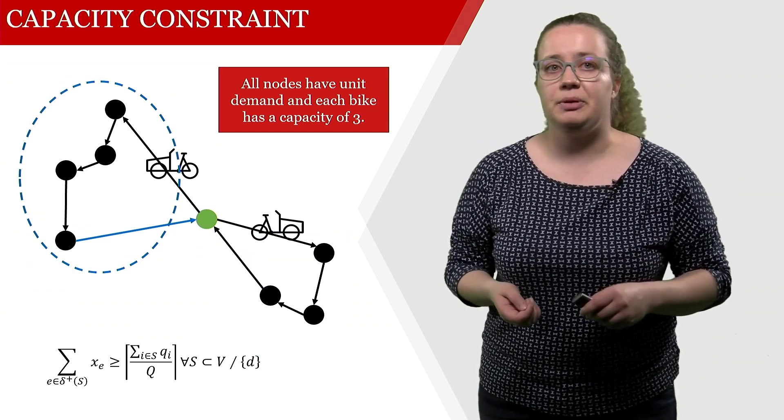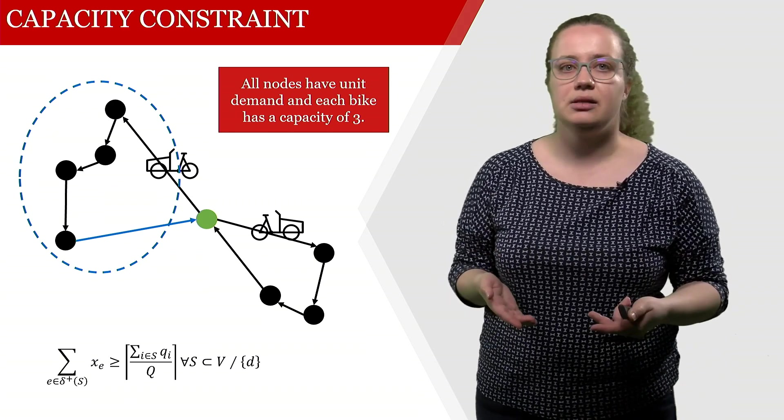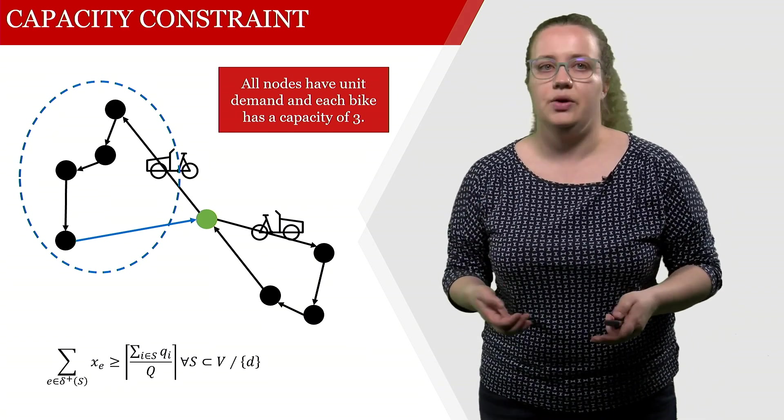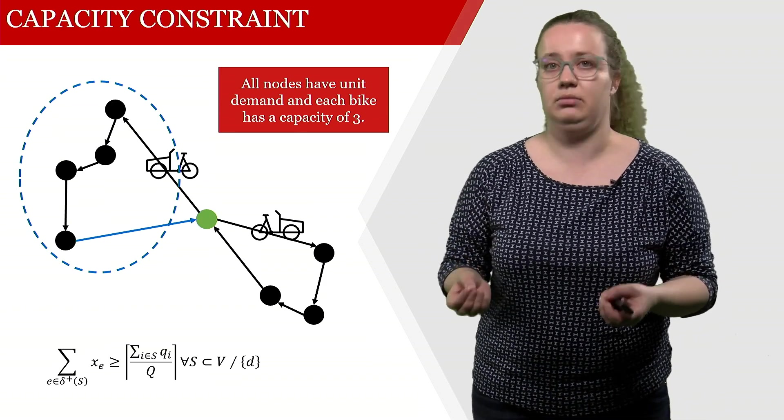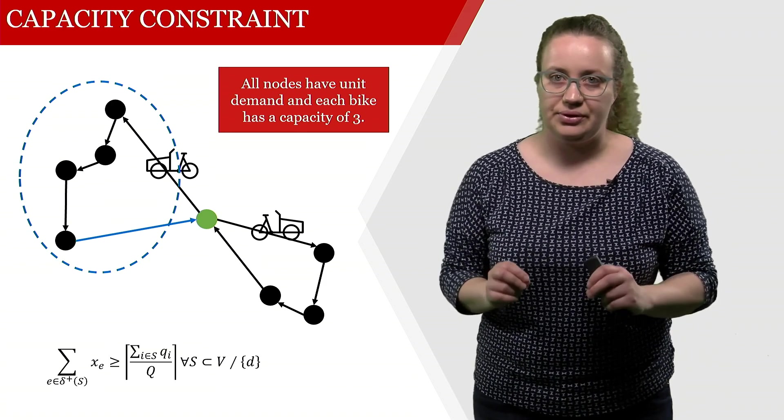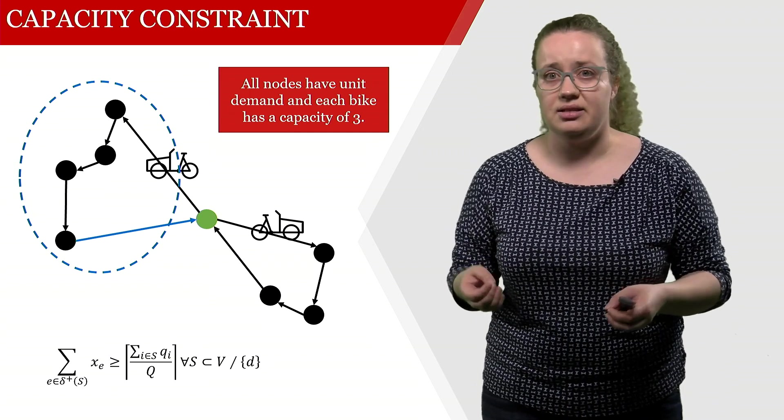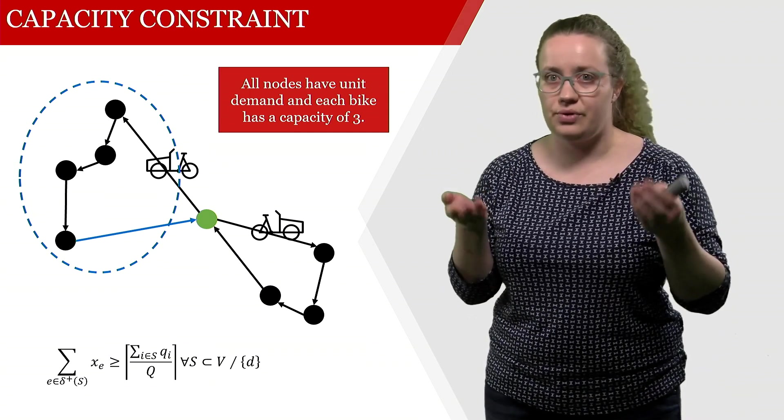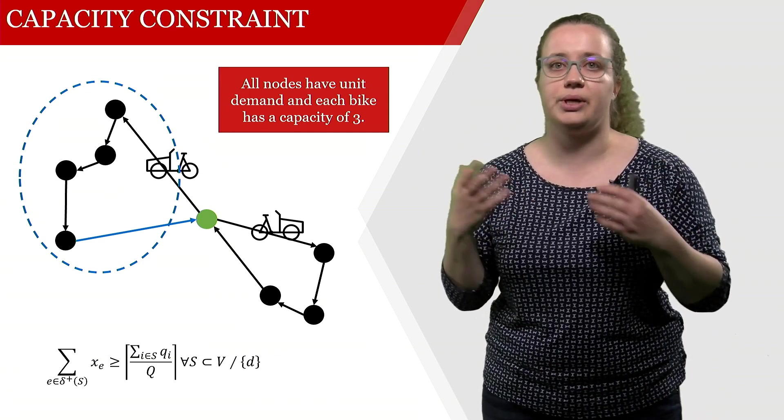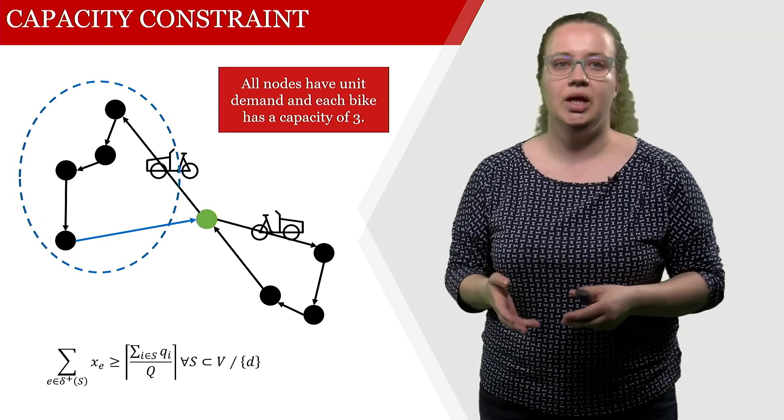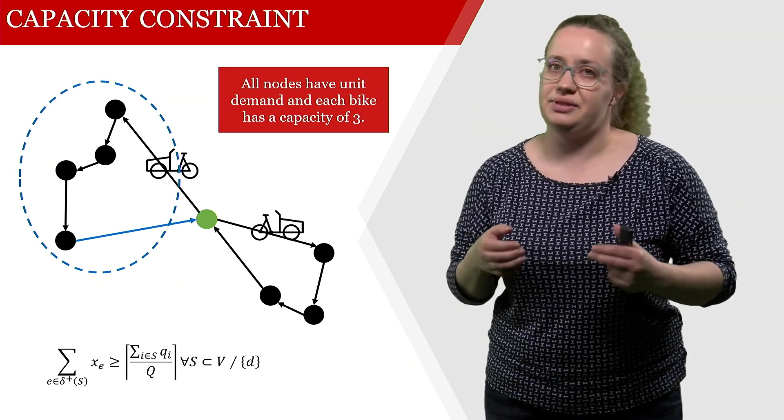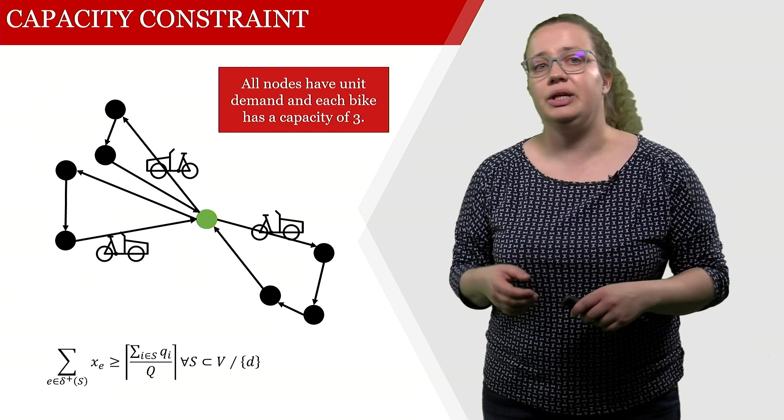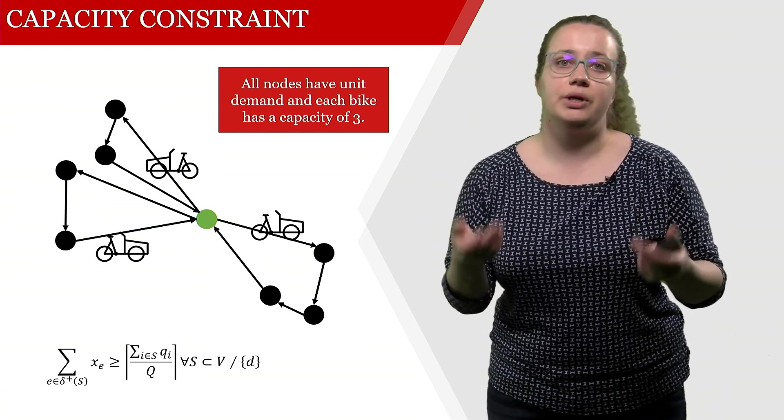It gets problematic once we start considering this subset, because in this subset we have a demand of four, which we divide by a capacity of three. So this tells us that we have to have at least, rounding up to the next integer, four over three gives us two arcs that leave this subset. The only way that this works is by introducing one additional vehicle.